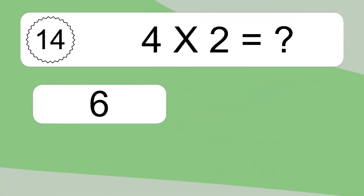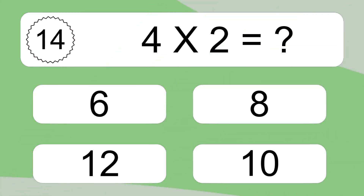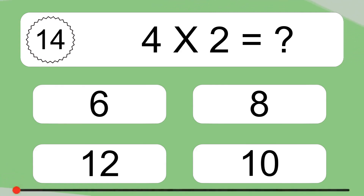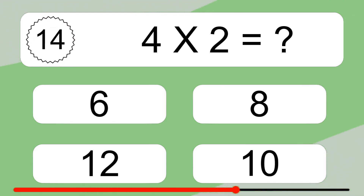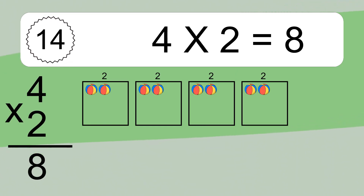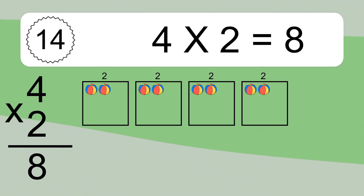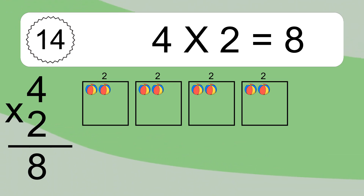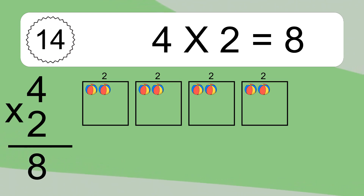4 times 2 equals what? 4 times 2 equals 8. We have 4 boxes, and each box has 2 colorful balls inside. If you count all the balls in all the boxes together, you will have 4 times 2 balls. This equals 8 balls.